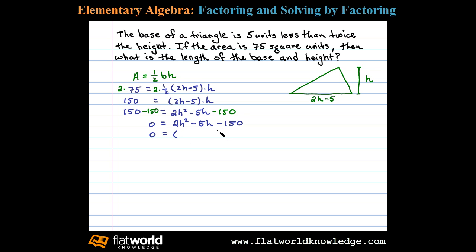Now, we factor. 2h squared factors as 2h times h. The factors of 150 that we'll use are 15 and 10. If we write 2h plus 15 and h minus 10, well, then we can see the last term checks out. 15 times negative 10 is negative 150.